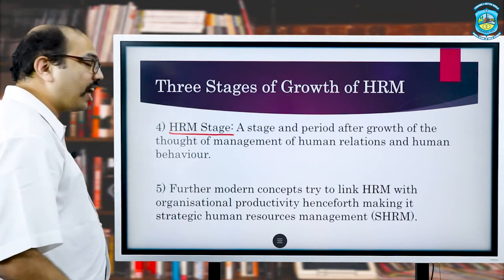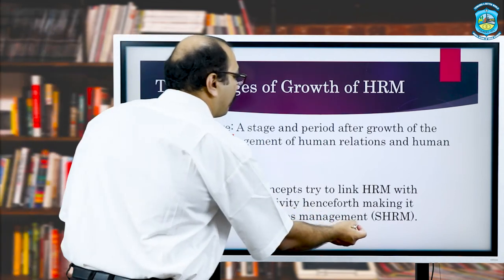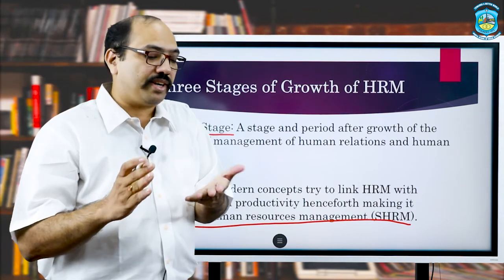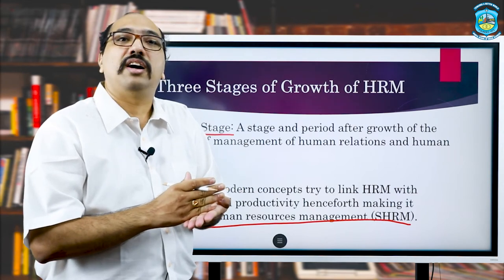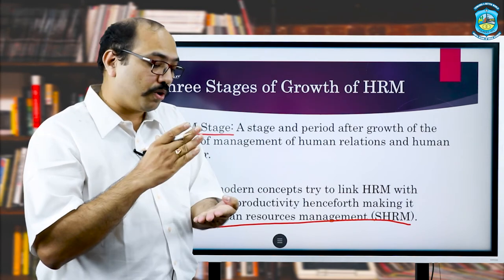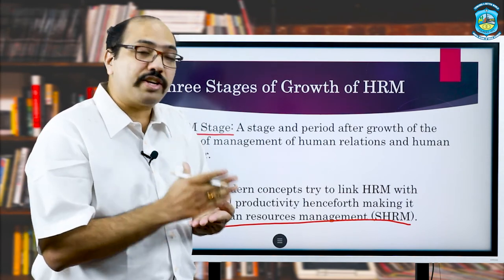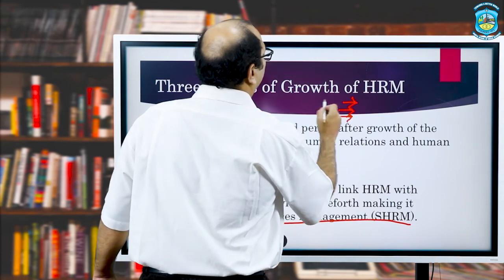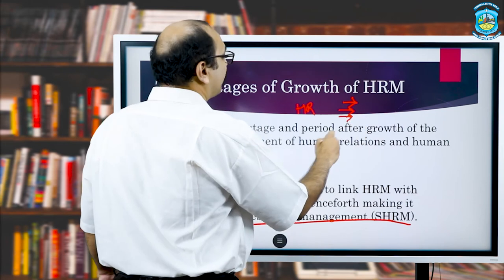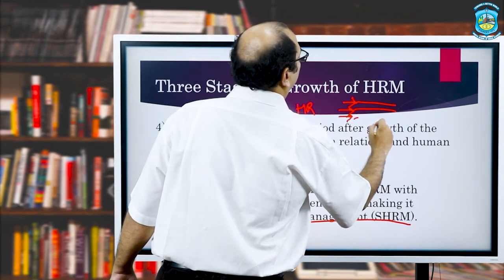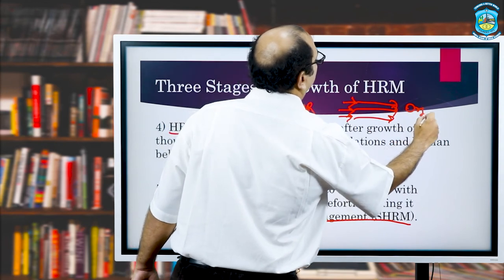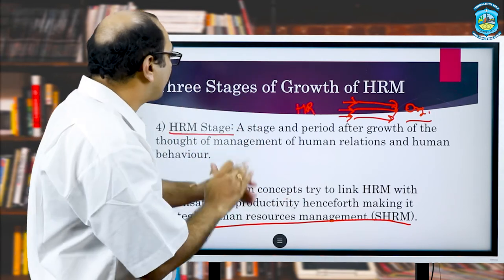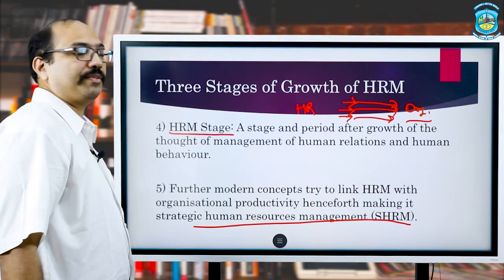The last stage, which is now coming up, is known as strategic human resources management. This is because people believe that the goals of organizations are very important, and the way human resources are managed should be in line with organizational objectives — the HR objectives should contribute towards and align with the objectives of the organization. That thought process is basically known as strategic human resources management.